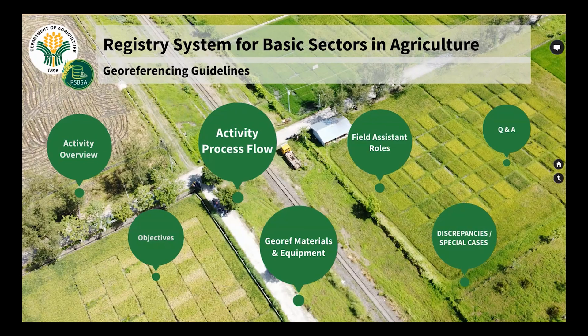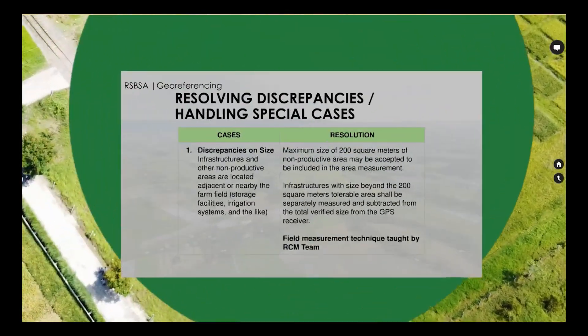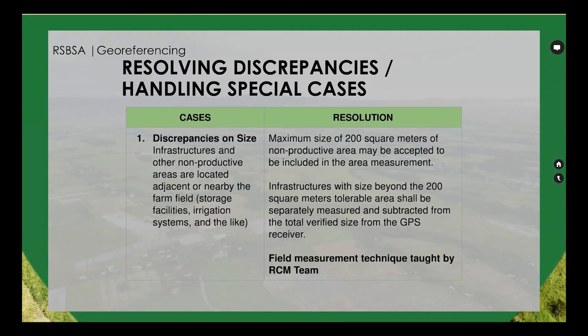Resolving discrepancies and handling special cases: Case 1 — discrepancies on size. Infrastructures and other non-productive areas located adjacent or nearby the farm field — such as storage facilities and irrigation systems — resolution: a maximum size of 200 square meters of non-productive area may be accepted to be included in the area measurement.